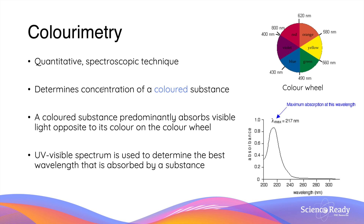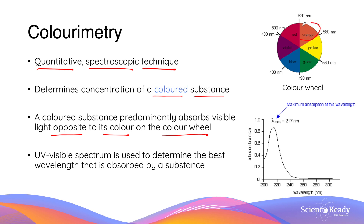Colorimetry is very similar to UV visible spectrophotometry — it is again a quantitative spectroscopic technique. However, it is used to determine the concentration of a colored substance, and it relies on the fact that a colored substance will predominantly absorb a color of visible light that is opposite to its color on the color wheel. For example, if a substance appears to be orange, then that substance will likely absorb blue colored visible light. If a substance is red, then the substance will likely absorb green colored visible light.